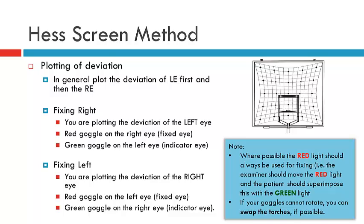It's recommended that you plot the left eye first, then the right eye. This means you plot the right eye fixing first, with the red goggle in front of the right eye and the green goggle in front of the left. You then swap the goggles over — green goggle in front of the right eye, red goggle in front of the left eye — and now you'll be plotting the right eye, with the left eye as the fixing eye and the right eye as the indicator eye.